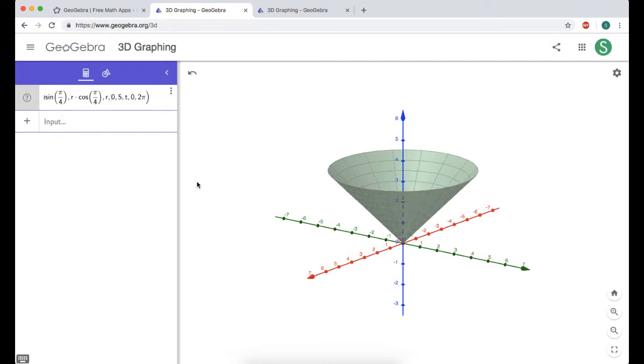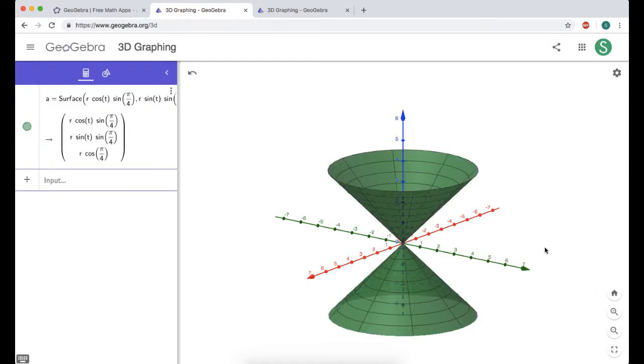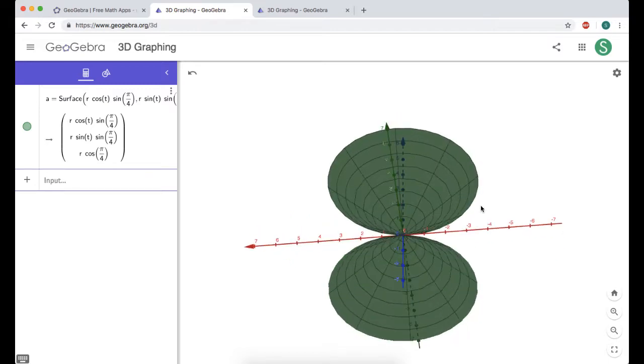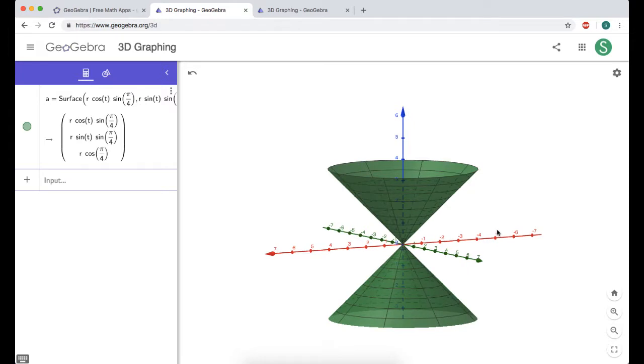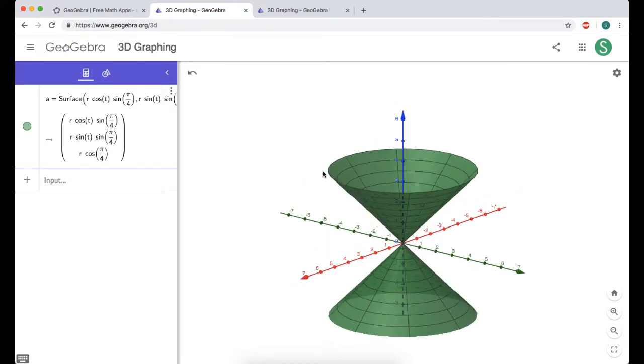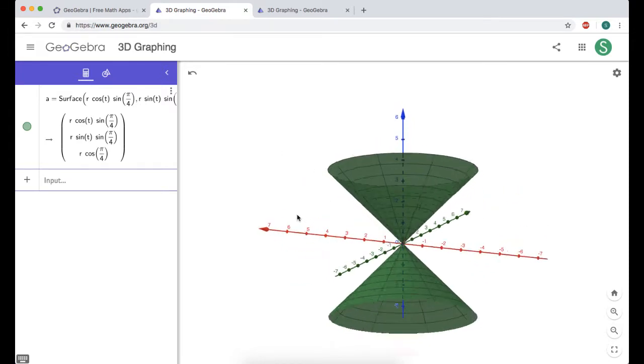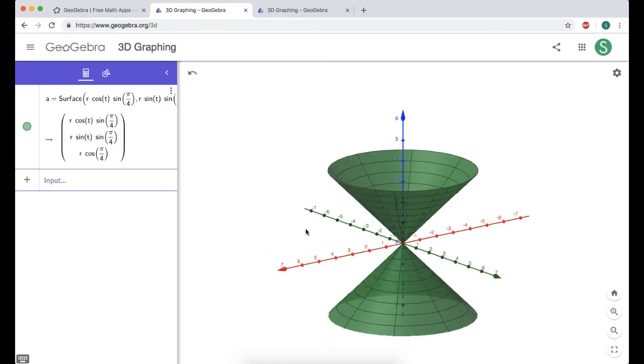So what I'm going to do is I'm actually just going to change this from 0 to 5 to negative 5 to 5, press enter, and you can see now I'm actually getting both sides. And that's really good, because that's basically what I wanted. The whole idea with using GeoGebra for these things is that you get to play around with it, and you get to learn what's actually happening.